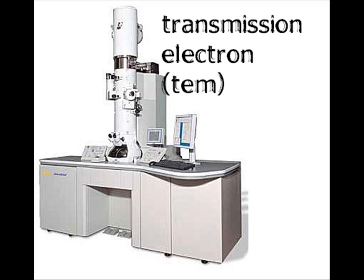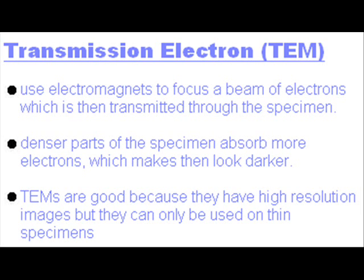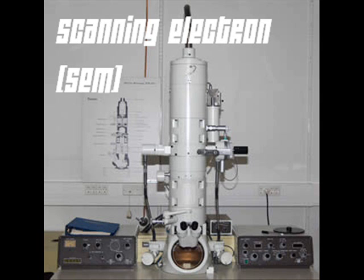The transmission electron microscope uses electromagnets to focus a beam of electrons, which is then transmitted through the specimen. Denser parts of the specimen absorb more electrons, which makes them look darker on the image. TEMs are good because they provide higher resolution images, but they can only be used on thin specimens.